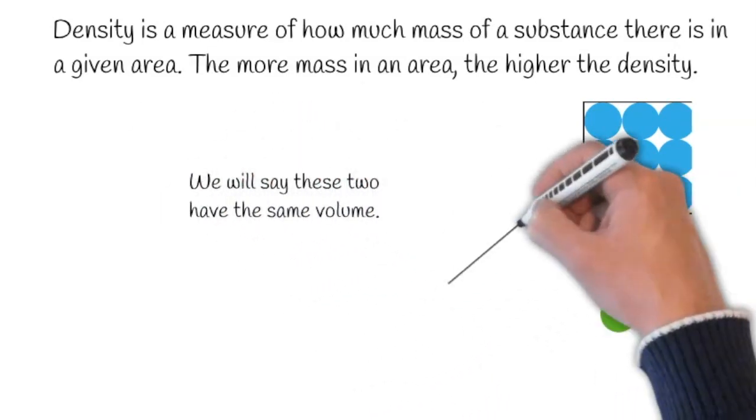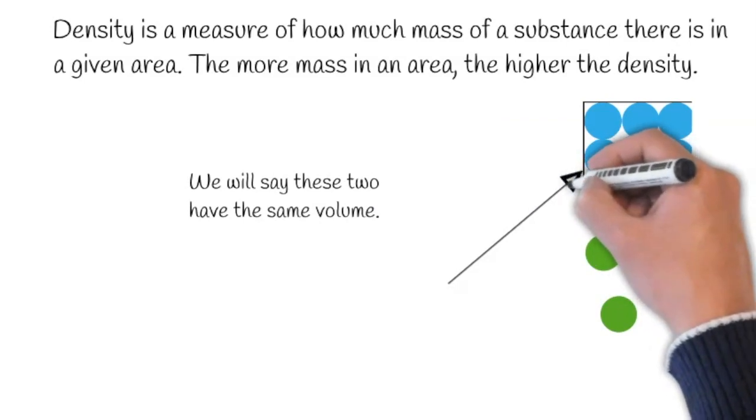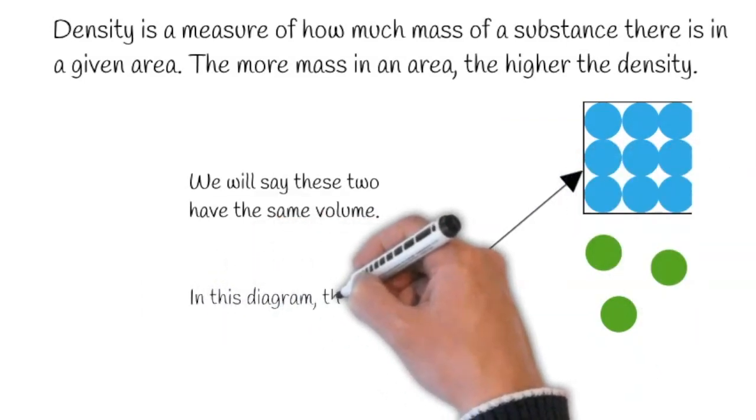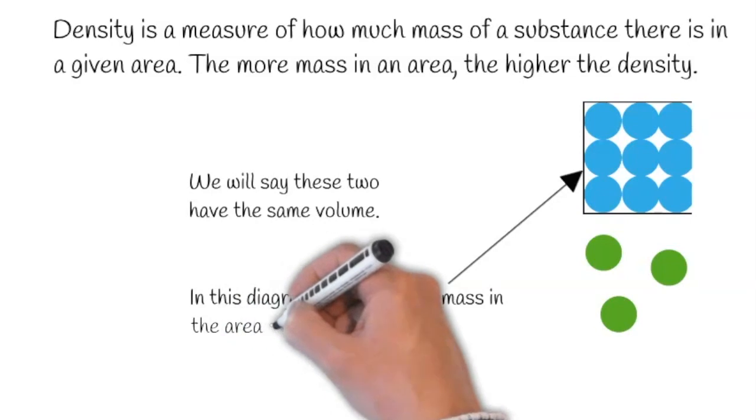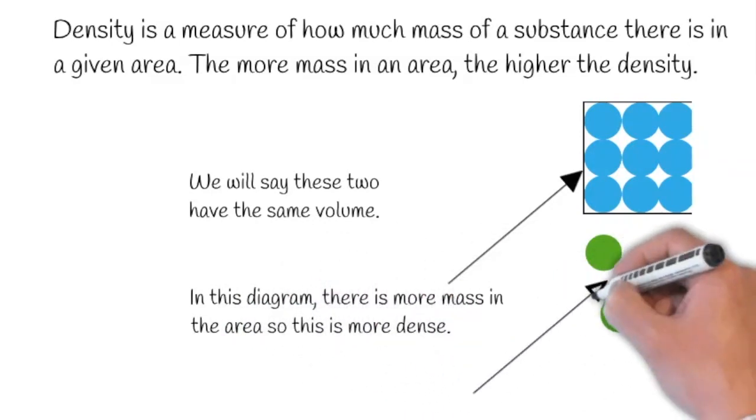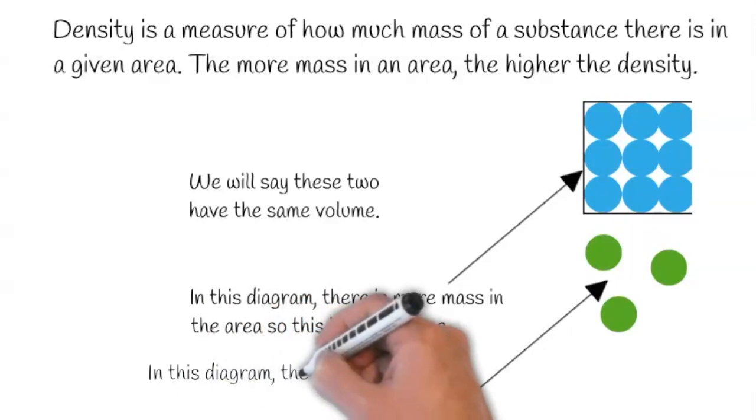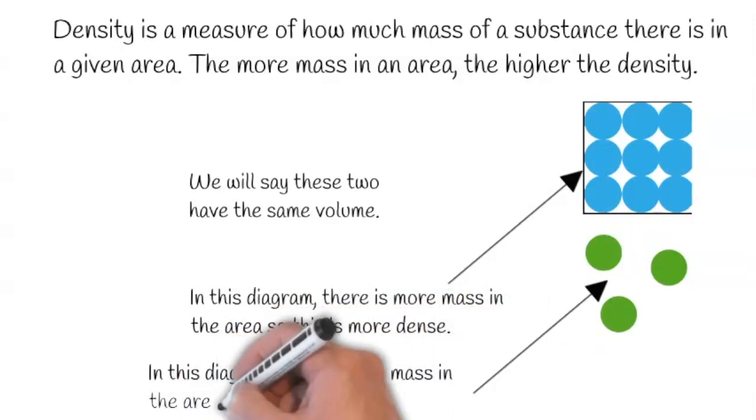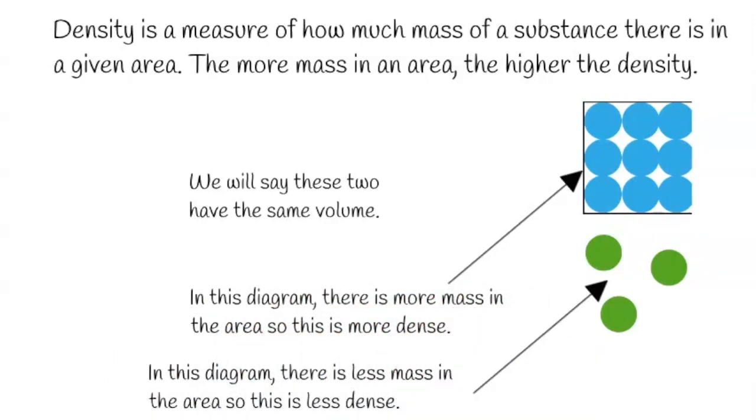These have the same volume. In this diagram we can see there is more mass in the area, so it is more dense, whereas in this diagram there is less mass in the area, so it is less dense.